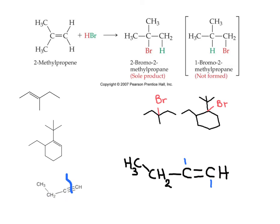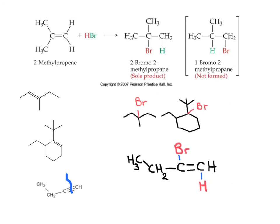We break one of the double bonds, add two brand new bonds, and then add the halogen to the central carbon and the hydrogen to the terminal carbon. The intermediate product is an unsaturated haloalkene.